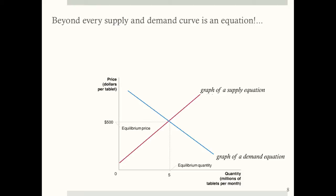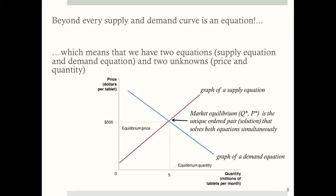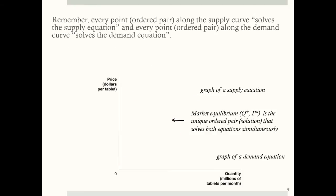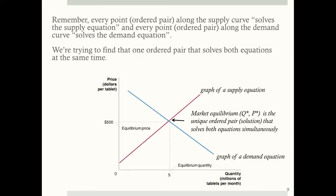Beyond every supply and demand curve is an equation, which means that when we're looking at a supply and demand problem, we have two equations — a supply equation and a demand equation — and two unknowns, price and quantity. The market equilibrium, Q star and P star, is that unique ordered pair, the solution, that solves both equations simultaneously. Every ordered pair along the supply curve solves the supply equation, and every ordered pair along the demand curve solves the demand equation. Finding market equilibrium means finding that one unique ordered pair that solves both equations at the same time.